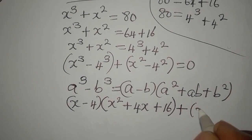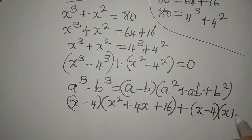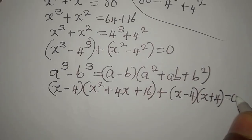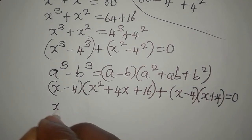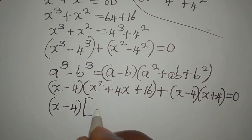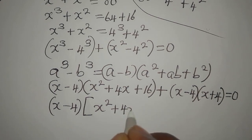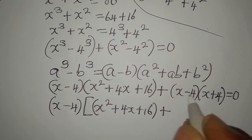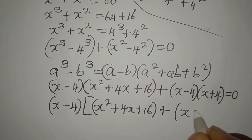Then the difference of two squares gives us (x minus 4)(x plus 4). We close this and equate to zero, so x minus 4 becomes the common factor, and here we have x² + 4x + 16, then plus x minus 4 is already here, so we have x plus 4.